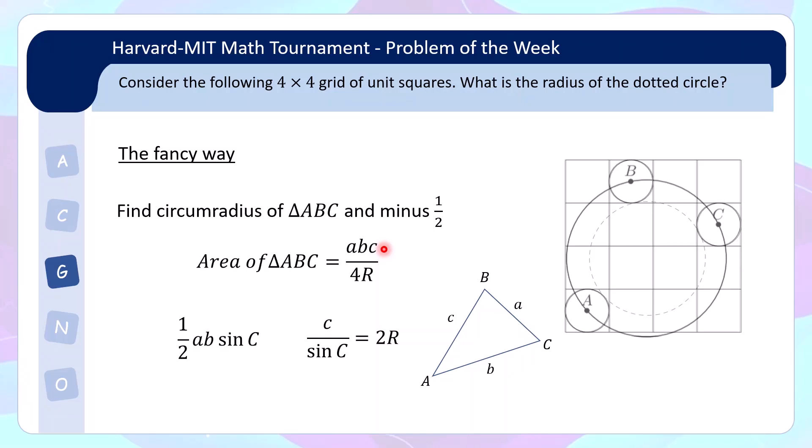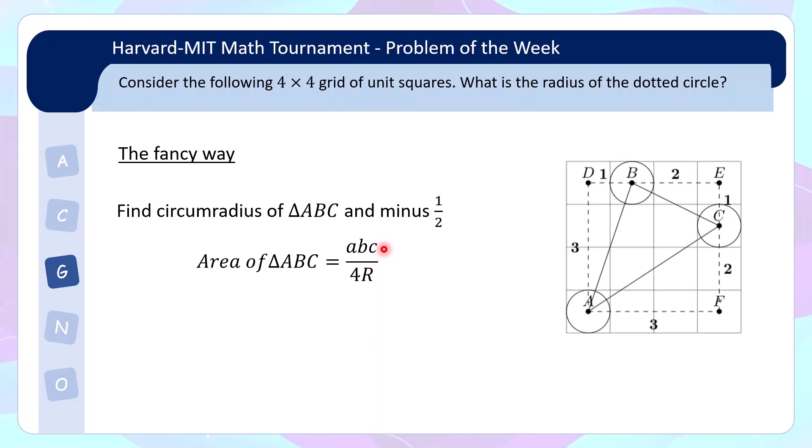So in this case, we can find the circumradius if we can find the area and the side length. And the area is actually quite easy. We will use this fancy diagram here, where we realize that, okay, we can actually have this dotted square, which is of side length 3. And then we have all these very nice side lengths, which will allow us to calculate the area of triangle ABC by taking the whole square area 9, subtract off the area of each of these right angle triangle. So half 3 times 1, half 2 times 1, and half 3 times 2. This gives the area of ABC as 7 over 2. And of course, the side length can be very easily calculated.